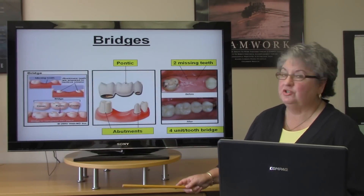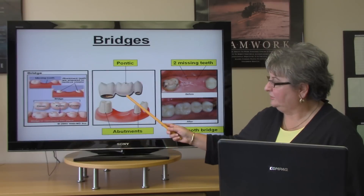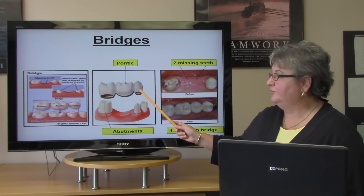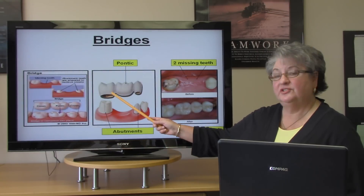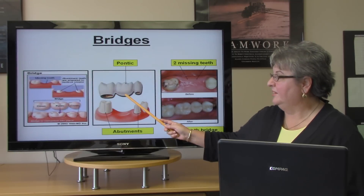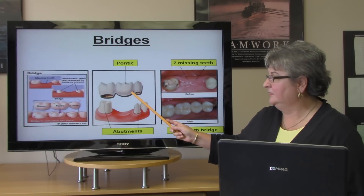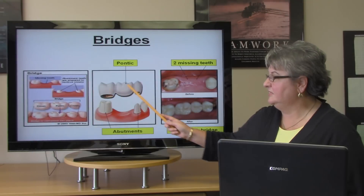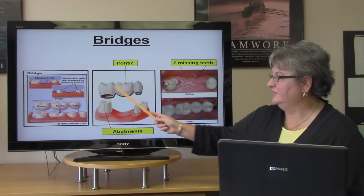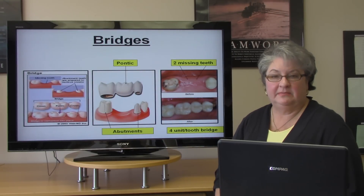Here is a picture of a bridge — this is a three-unit bridge where all three pieces are soldered together. The pontic is the false tooth in the middle, while the two teeth on either side are the abutment teeth.